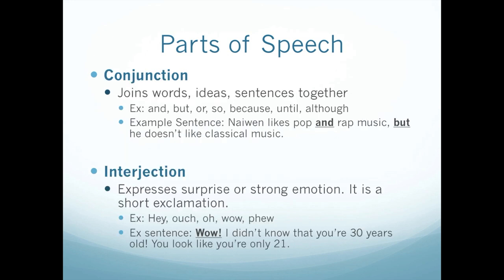Conjunction is another part of speech. A conjunction joins words, ideas, or sentences together. And, but, or, so, because, until, although are all conjunctions. For example: Nyland likes pop and rap music, but he doesn't like classical music. And and but are both conjunctions.